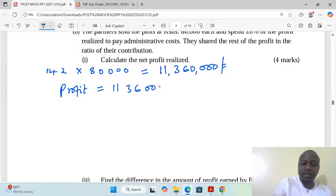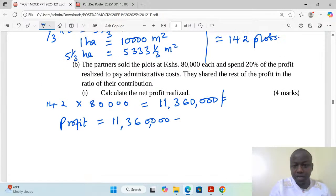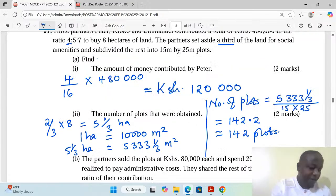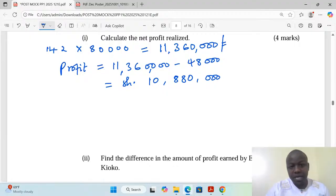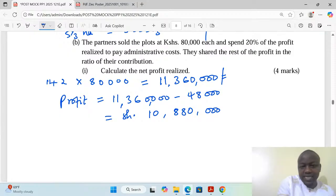Profit should be when we check the sales, then we subtract the amount that was paid for the land, 480,000. We subtract 480,000, this gives us 10 million 880 thousand Kenya shillings. This is now what we are calling the profits realized. But they are asking about the net profit. Net profit is the profit after all the expenses have been paid. Therefore 20 percent is going to be set aside for administrative costs.